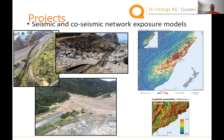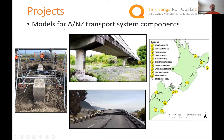The first project area is co-seismic network exposure. Models have been developed for immediately after an event — exploring what that means for network exposure. We can see the distribution of landslides after the Kaikoura earthquake, and models linking ground shaking to estimate landslide exposure across networks. We can also look longer term — for example, a re-mobilized landslide along the Kaikoura coast following a cyclone, exploring combined hazards and long-term environmental impacts.